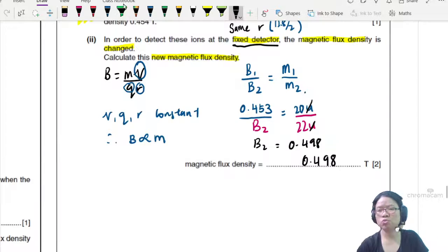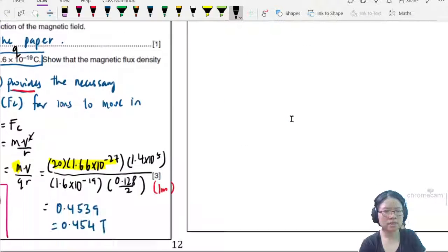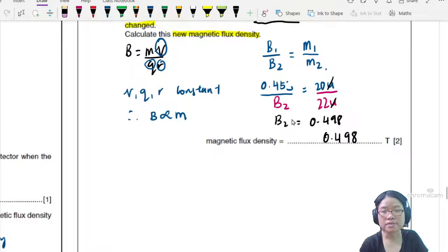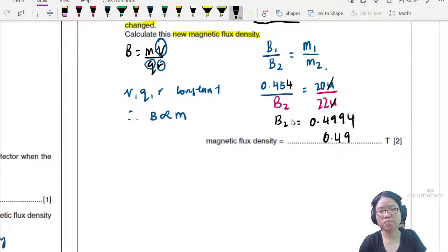Is it 454? Sorry, did I copy wrongly? Ah, yes. 454. My bad. Let me adjust this. 454. So this one would be 499. Yes, 0.4994. So 0.499 tesla.